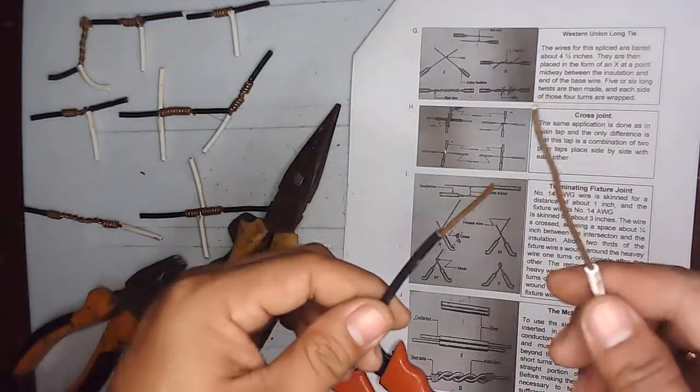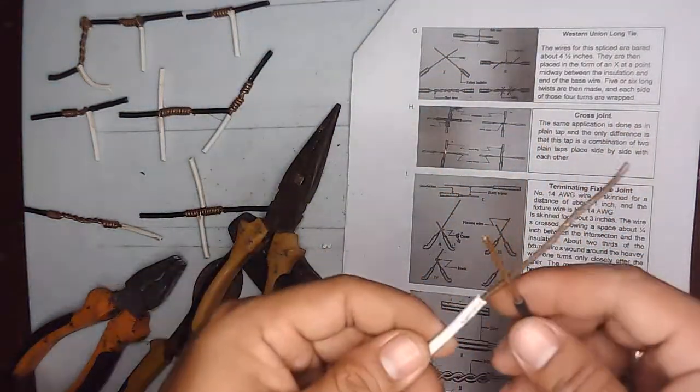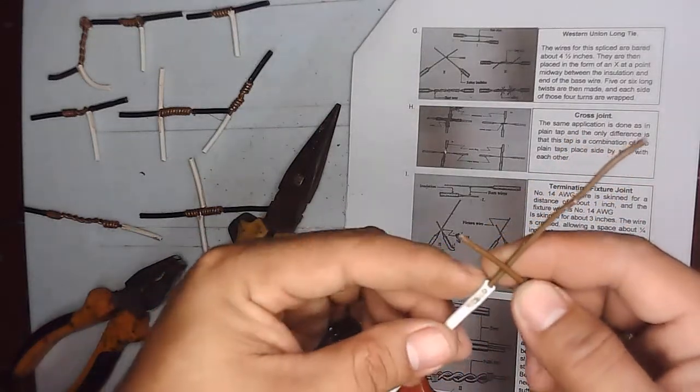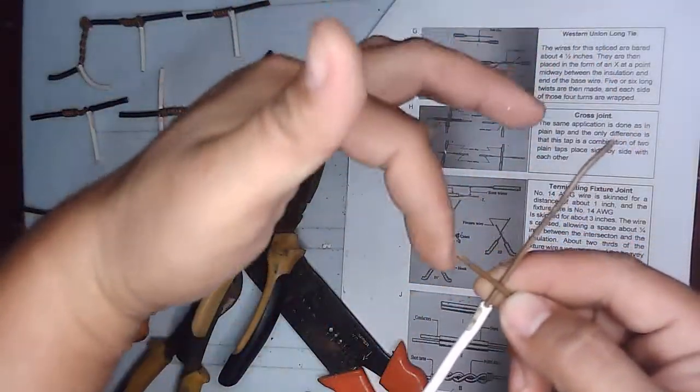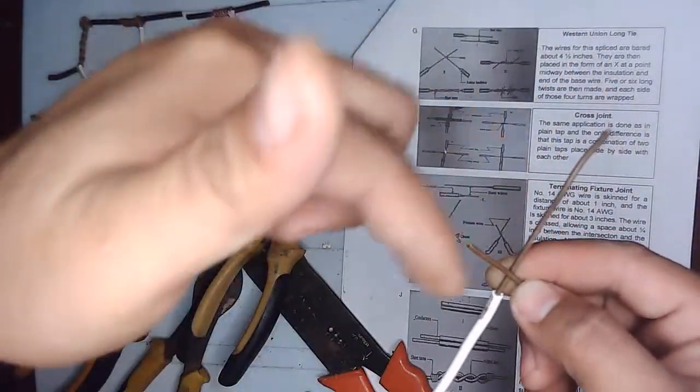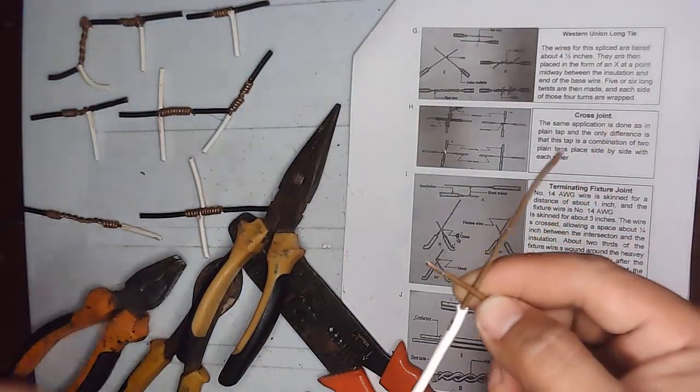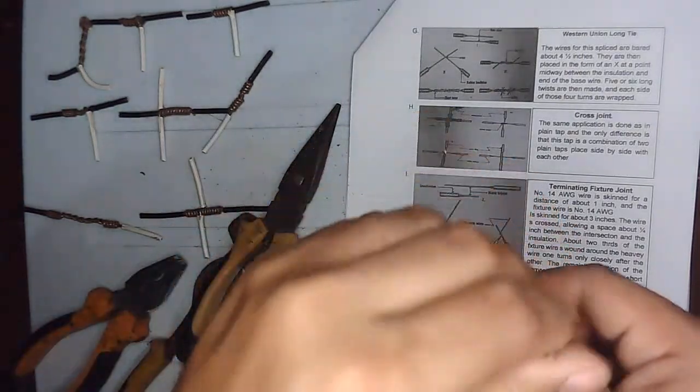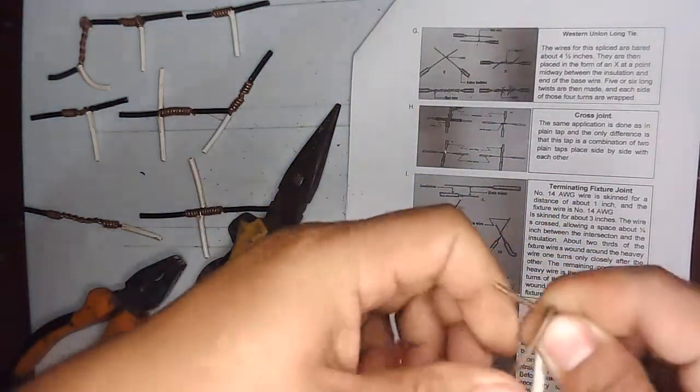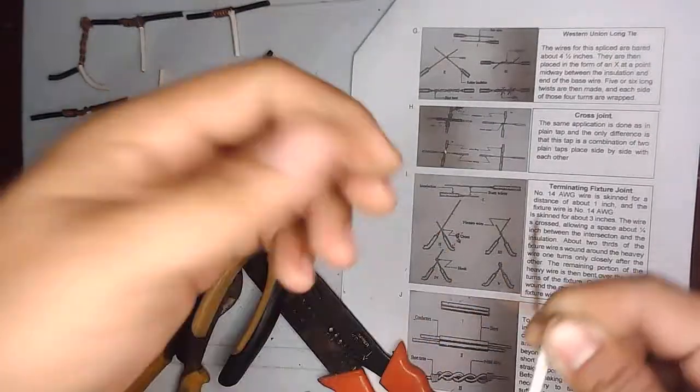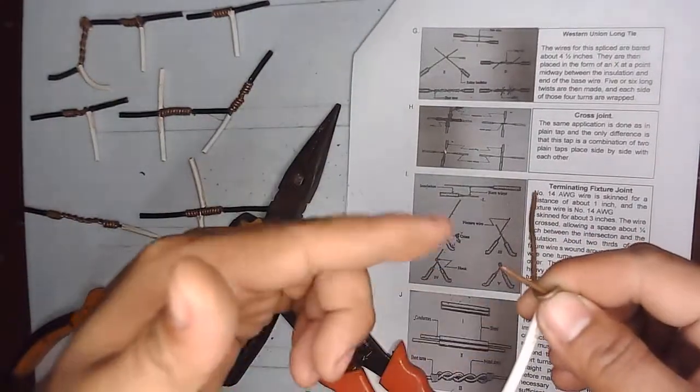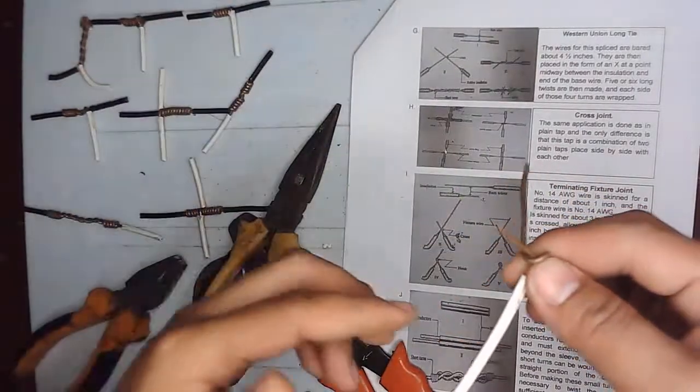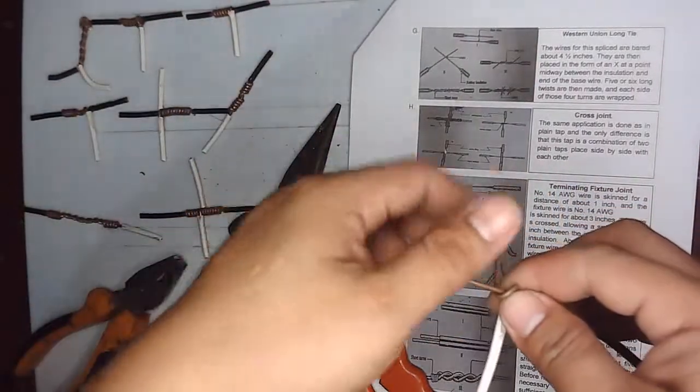Next is place in a cross position. The longer bare wire will be wrapped around to the shorter one. It looks like a plain top, but the only difference is you will do this splice at both ends, not on the main wire and the top wire.